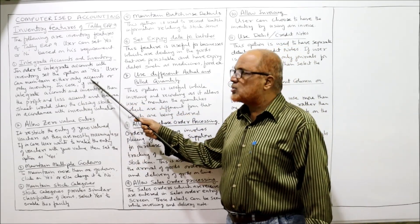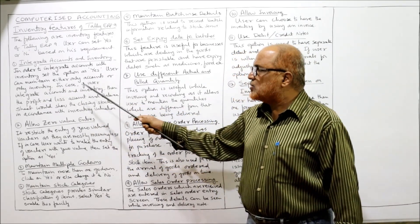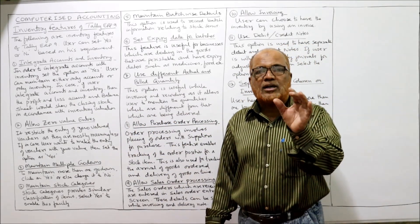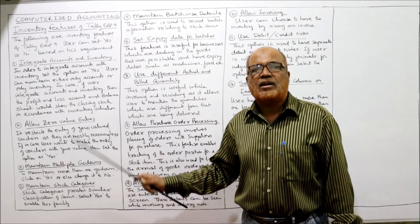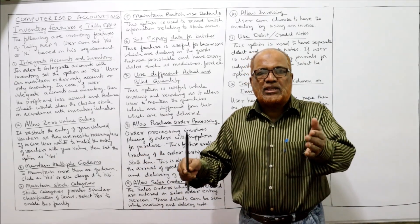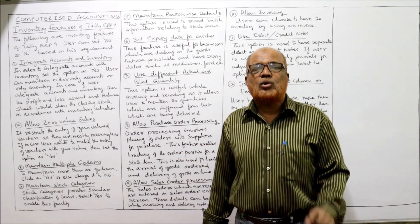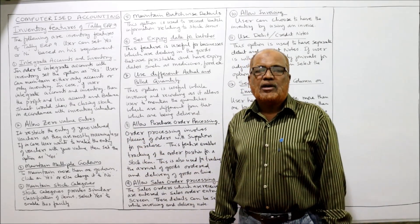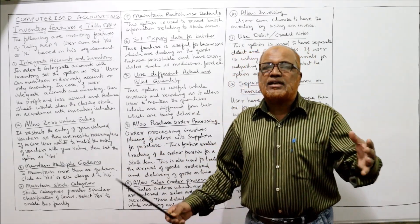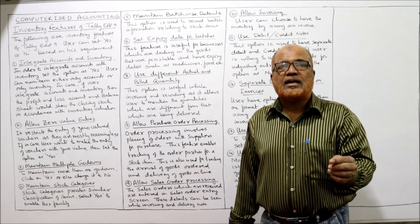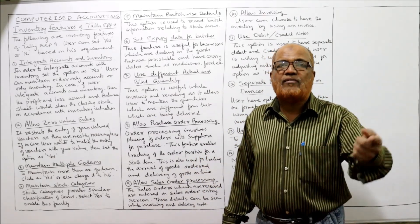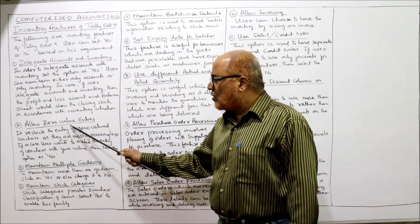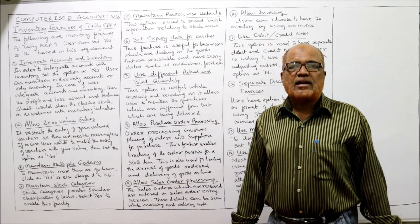If the user selects integrated accounts and inventory, then the profit and loss account and balance sheet will automatically take the closing inventory value from the inventory valuation — the value of closing stock is taken directly. However, if the user does not keep integrated accounts and inventory, then the user has to manually enter the value of closing inventory.